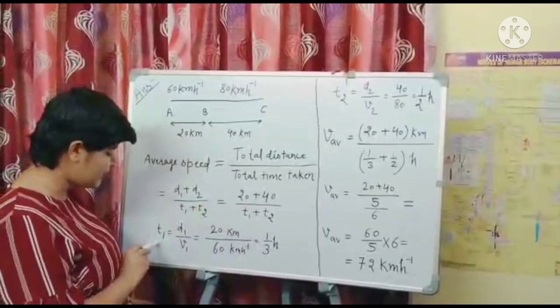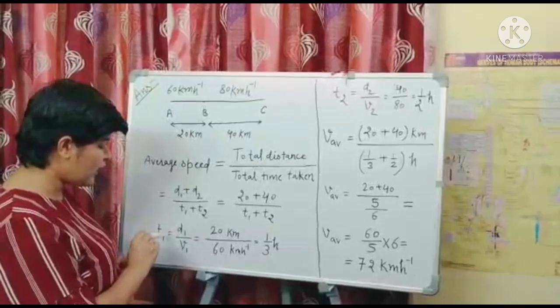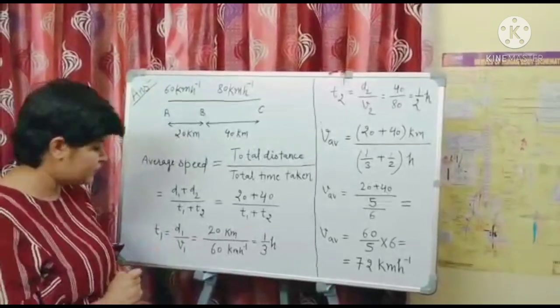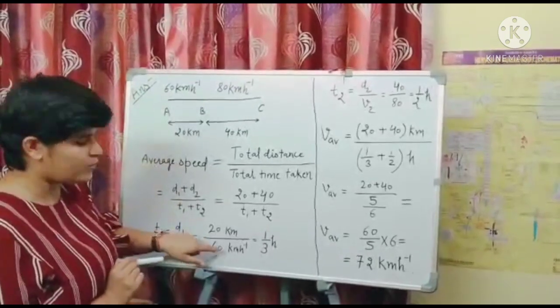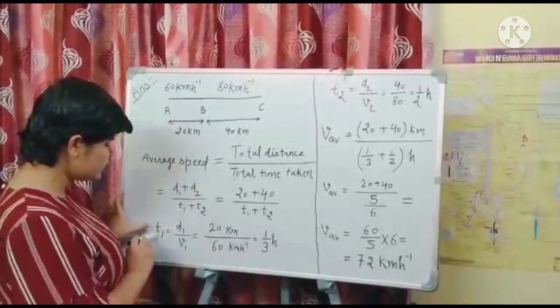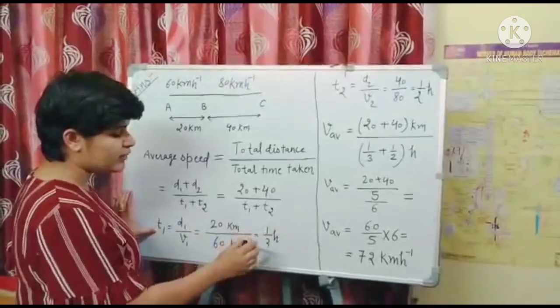So to calculate value of T1, we will use the formula D1 by V1. Here D1 is given 20 km and V1 is given 60 km per hour. So the T1 time will be 1 by 3 hour.